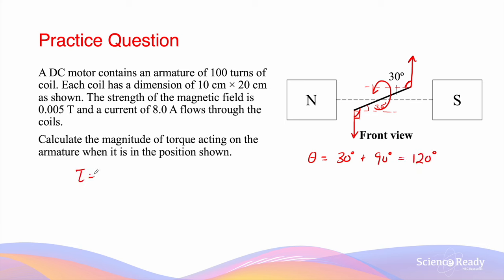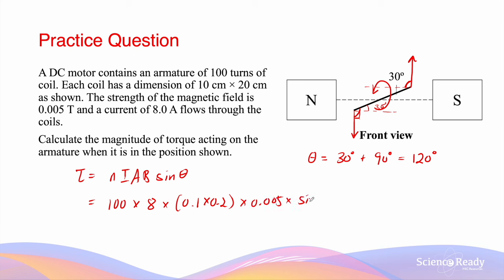So the torque is NIAB sin theta. The number of turns, current, and area remain the same as before, but the angle theta is now 120 degrees rather than 90 degrees. This gives an approximate total torque magnitude of 0.069 Nm.